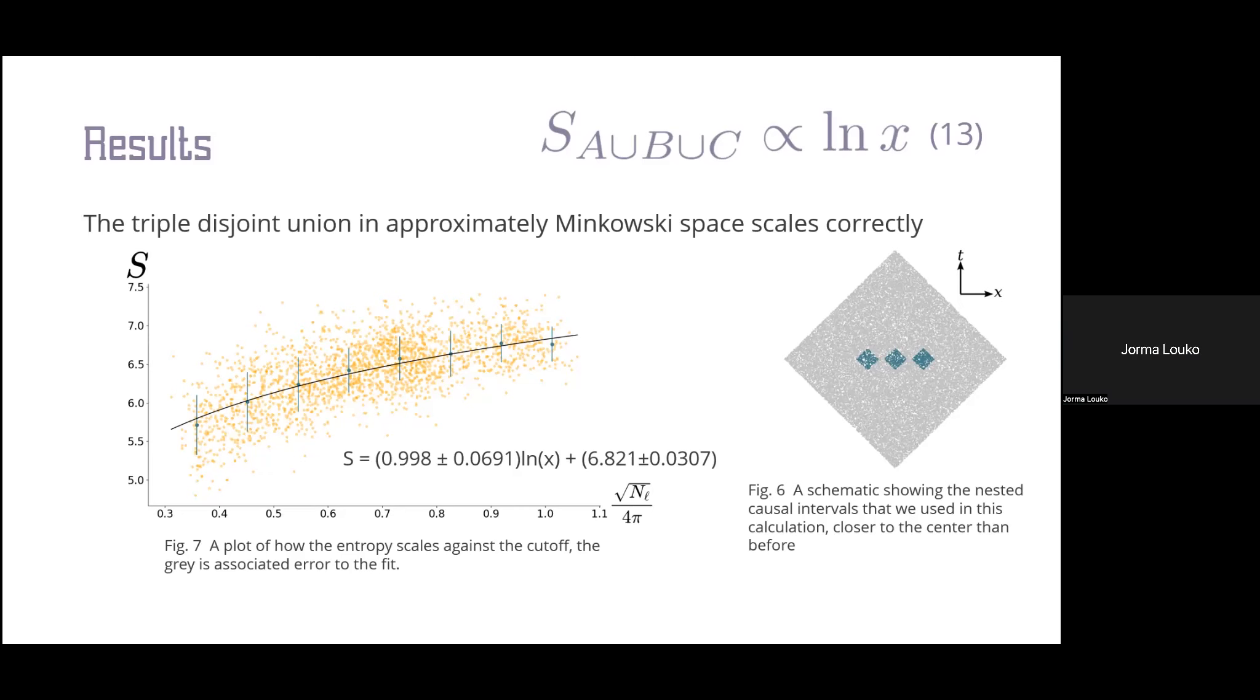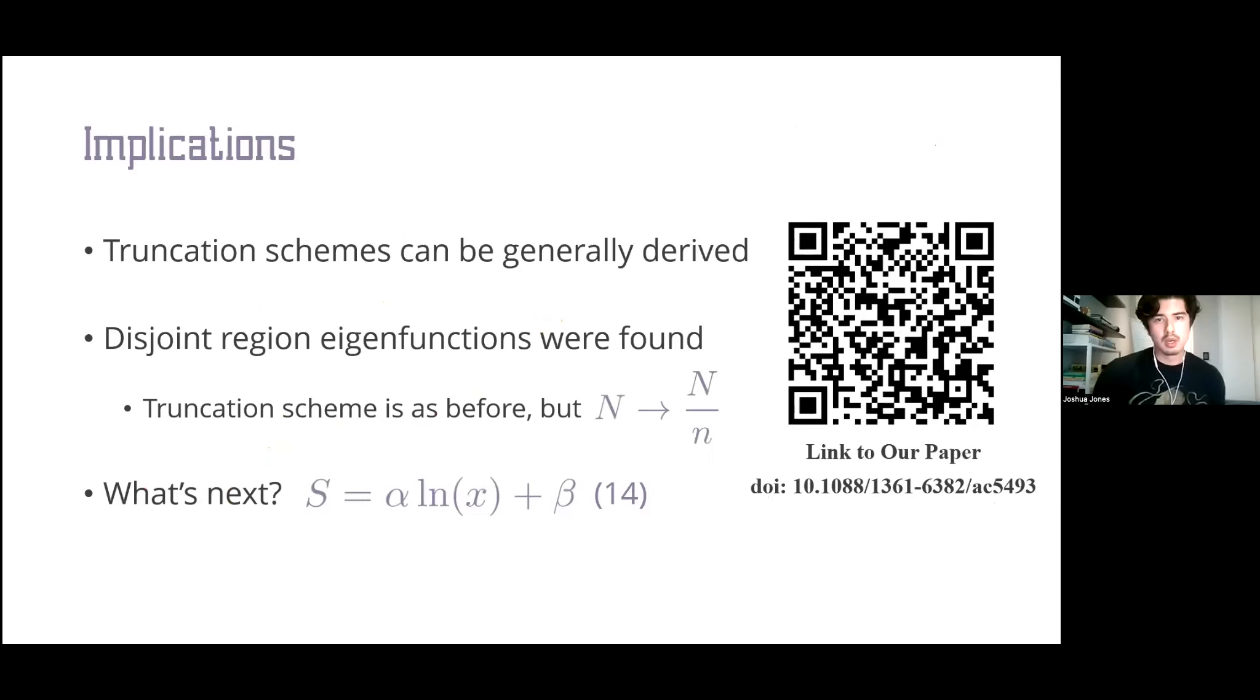You have two minutes. Okay, perfect, thank you. This basically brings me to my key point. We now understand how truncation schemes can be generally derived and how they scale up to disjoint regions.